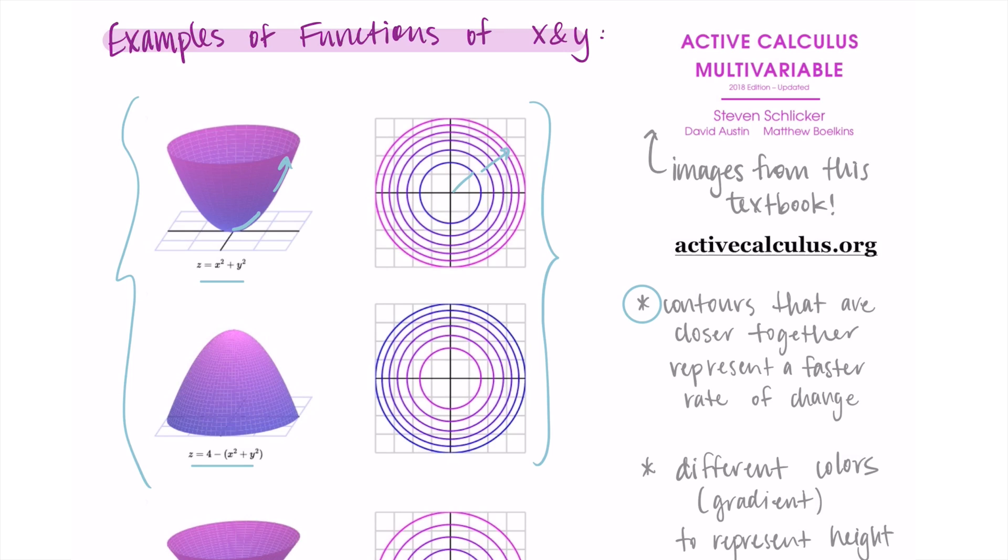We see the same thing for the second example, where things start off kind of flat and then they get very steep. We do flat, and then we get steeper down. This first part is far apart, and then we get close together at the end.